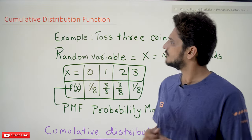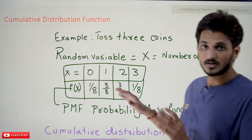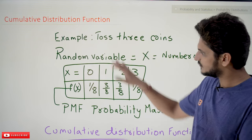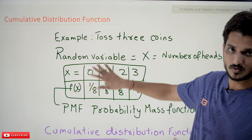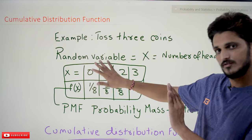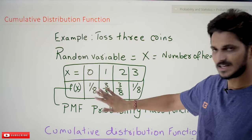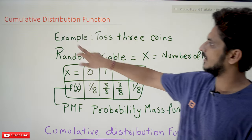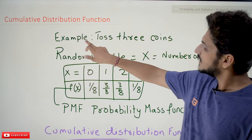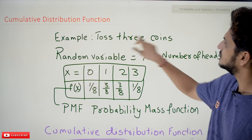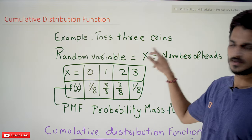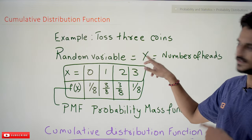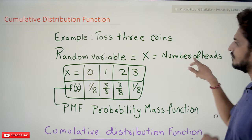Coming to today's concept, first we will refresh the example which we discussed in our last class, just for 30 seconds, then along with this example we will go into the concept of cumulative distribution function. In our last class we took the example of tossing three coins. Our random variable x is equal to number of heads.